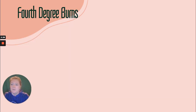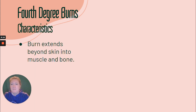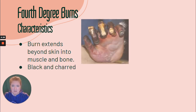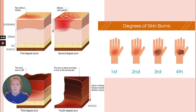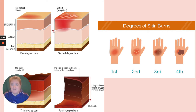Fourth degree burns — the burn extends beyond the skin, beyond the epidermis, beyond the dermis, even beyond the hypodermis, into muscle and bone. It's black and charred. To summarize: first degree has no blistering; second degree you see blisters; third degree can be black, brown, or white and extends into the dermis; fourth degree has a charred appearance and goes beyond all layers of the skin into muscle and bone.